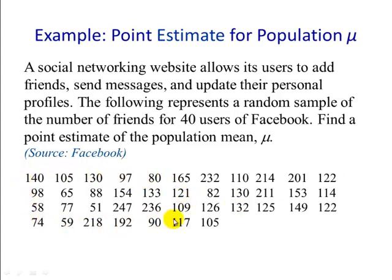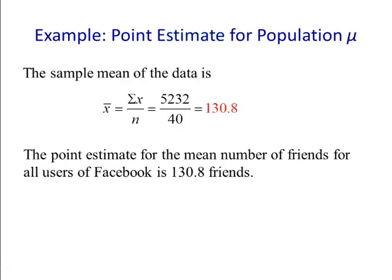This is the raw data. We have 40 users of Facebook. To compute the sample mean, we add up the number of friends, divide it by the number of users, 40.